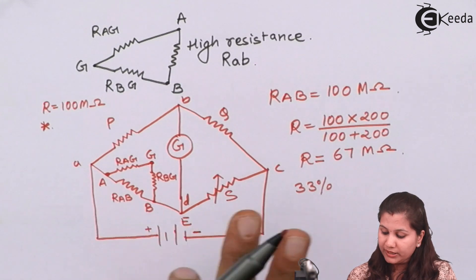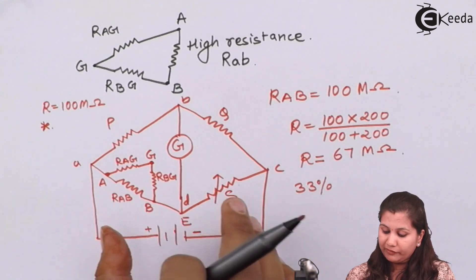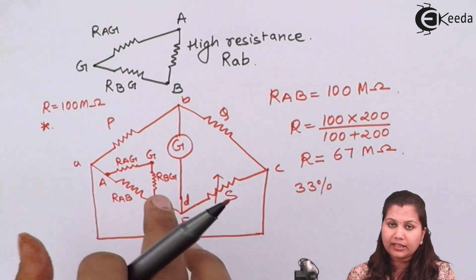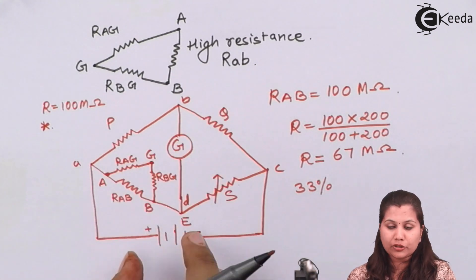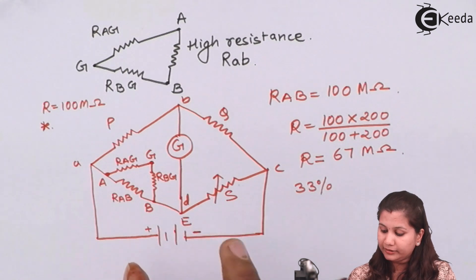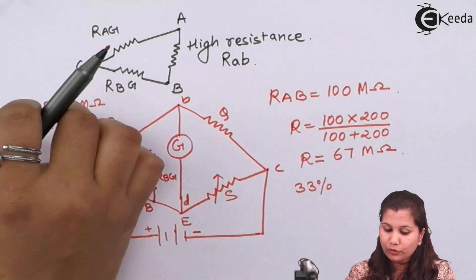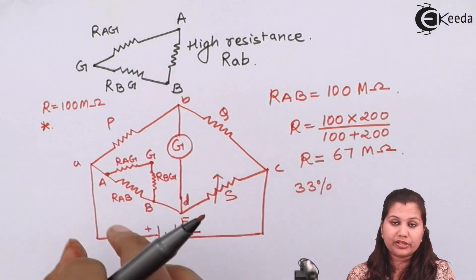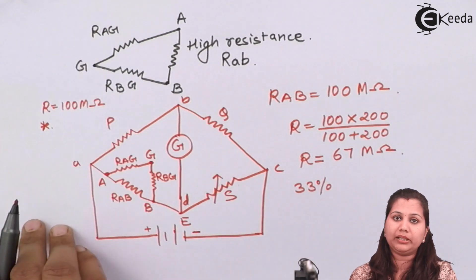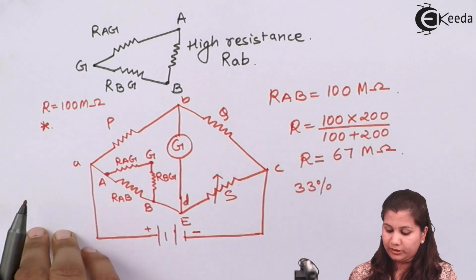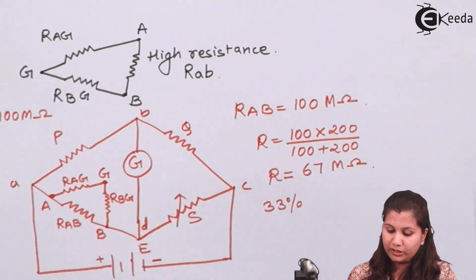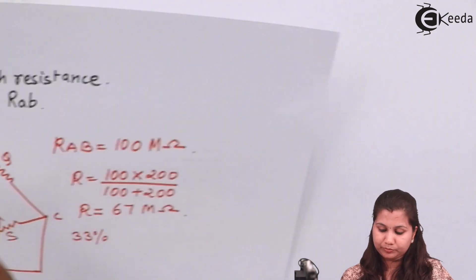To remove this error, some modification is done in the bridge so that the correct value of the unknown resistance can be measured.